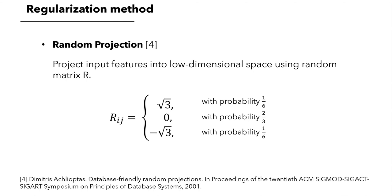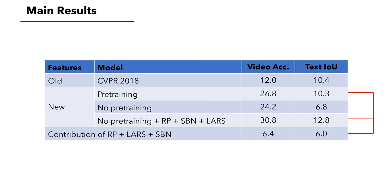Random projection alleviates the overfitting issue when the NewMatch network is trained on a small dataset. Not pre-training on LSMDC causes a 3.5% performance drop. The combination of LARS, SBN, and random projection not only closes the gap, but also surpasses the performance of pre-training by 2.5%, improving the performance by 6% in total compared to no pre-training.